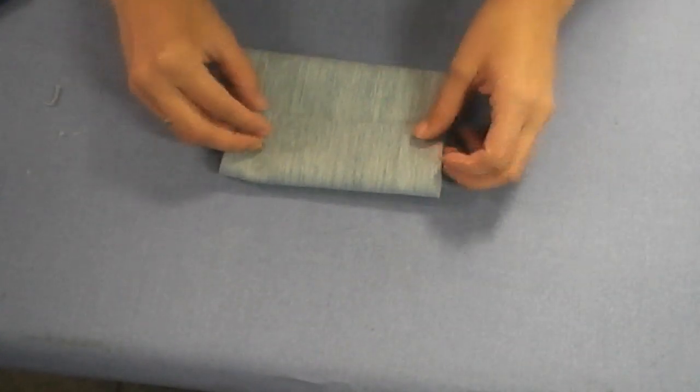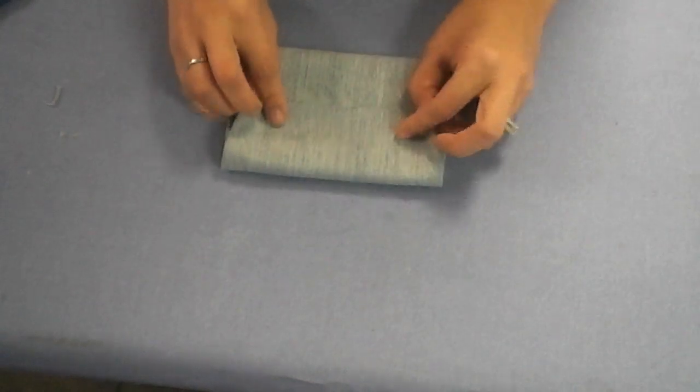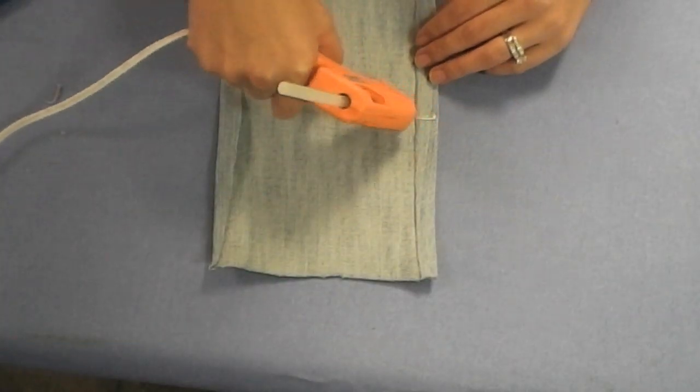And then you're still going to want to glue the middle just like you did with the first bow, making sure that it's nice and even.